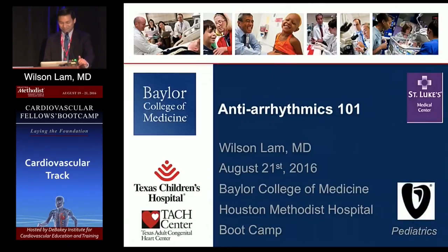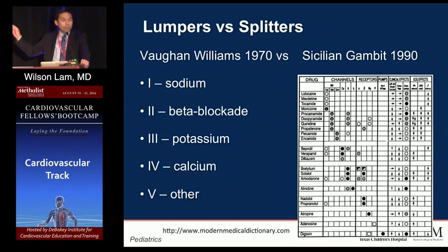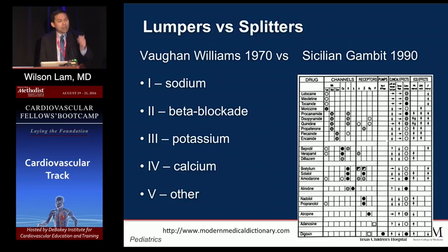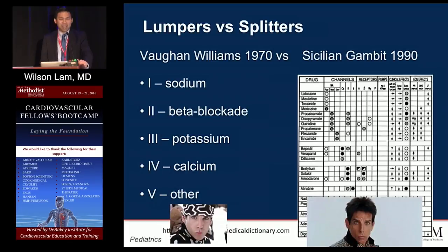Antiarrhythmics 101. The structure — whether you're a lumper and throw it into the five Vaughan Williams categories, or fast forward two decades and use something called the Sicilian Gambit, which was essentially a way to break down Vaughan Williams into all the other various clinical effects. You can break it down by thinking: is there beta blockade, is there inotropy, is there chronotropy? It's also a great way to get a vacation in Sicily to debate this — but for anyone who's seen Zoolander, they're really the same thing.